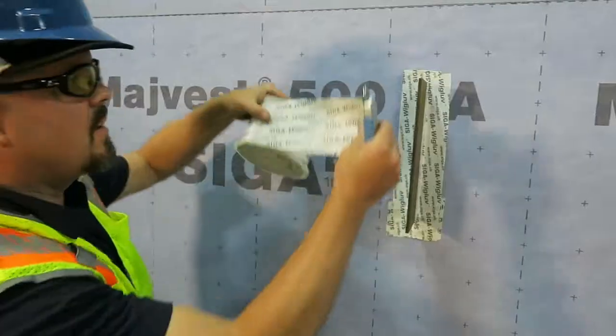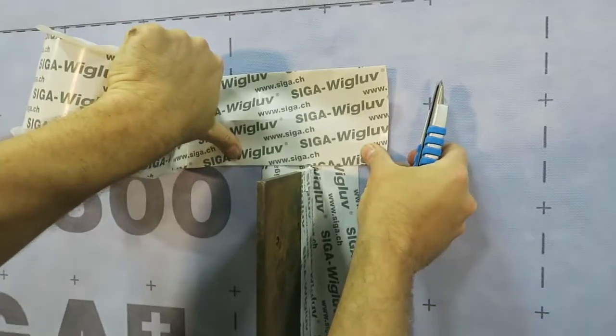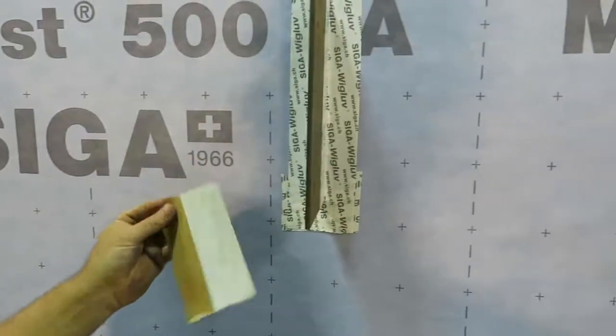Final step is to flash the top. We want to come one inch wide on either side. We repeat the same steps.